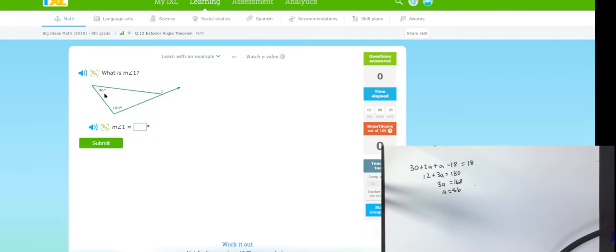Measure of one is equal to whatever those two add up to, which would be 150 degrees.